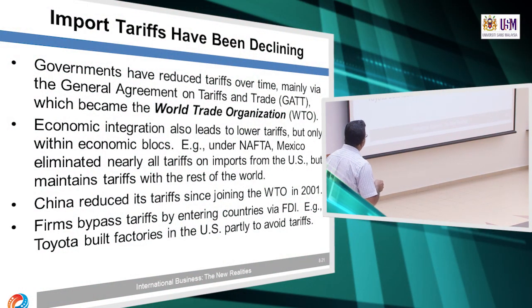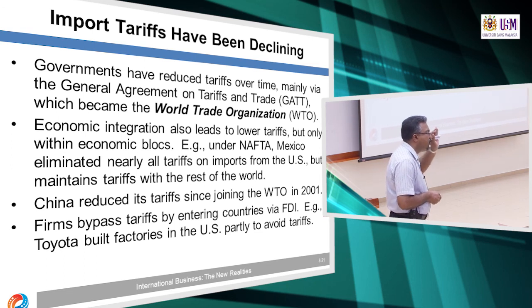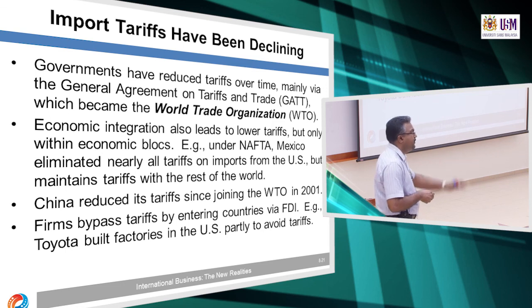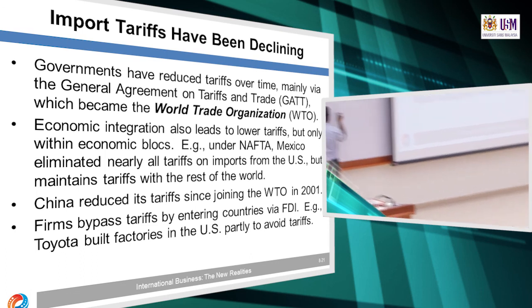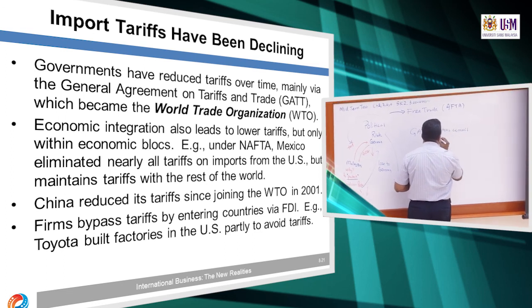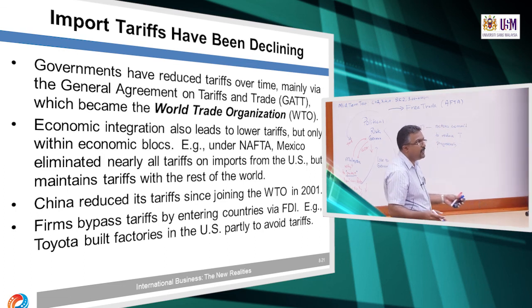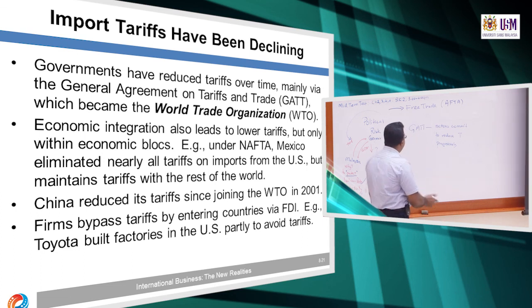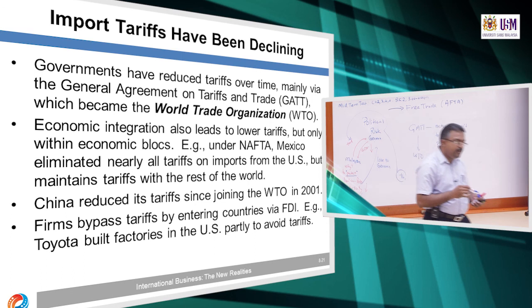GATT is an agreement where nations commit to progressively reduce tariff — we cannot drop it within a day or a year, so we reduce it progressively. After GATT, the WTO — World Trade Organization — took over in 1995, renamed from GATT. WTO also makes nations commit to progressively reduce tariffs.